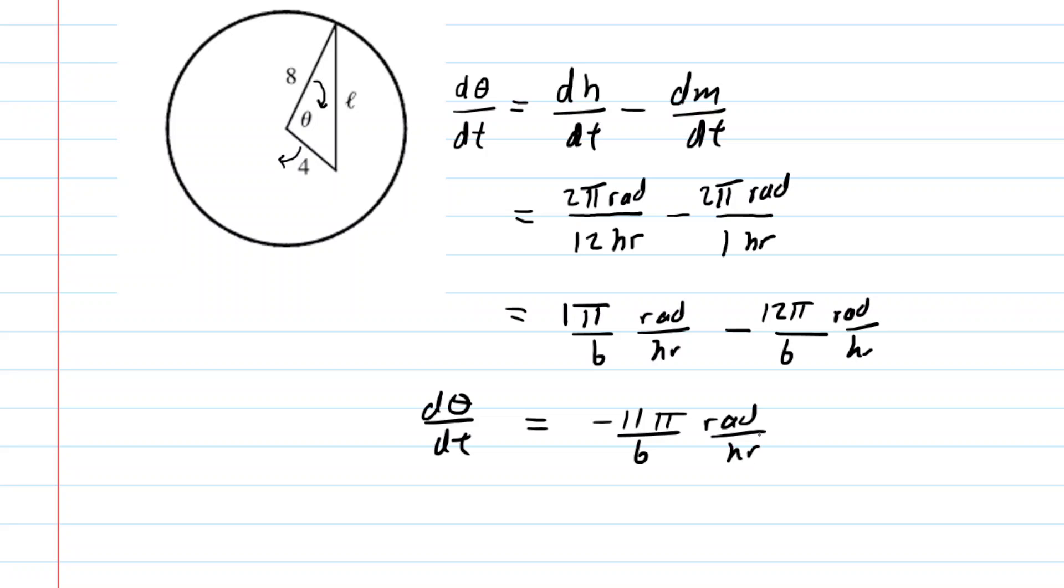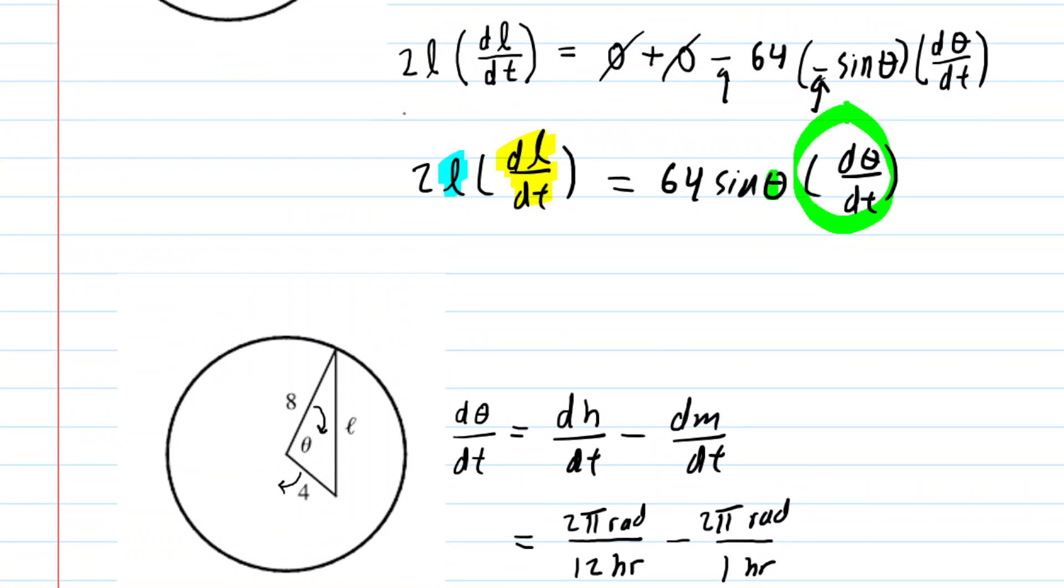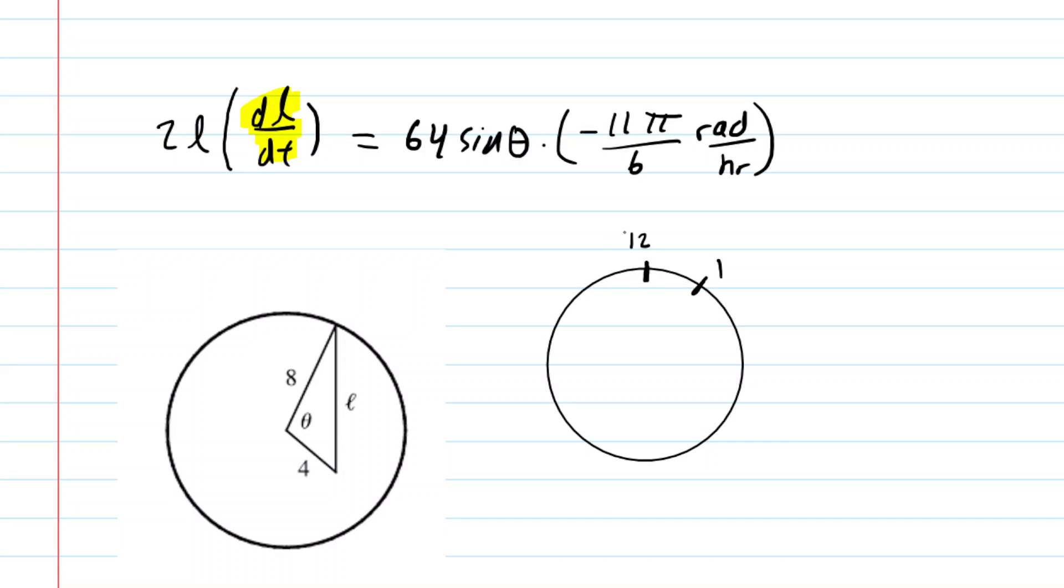So that's fantastic. We now have d(theta)/dt, and we're going to go back and insert that into our equation that we established earlier. Great, we've put that in for the d(theta)/dt right here, that negative 11π/6.